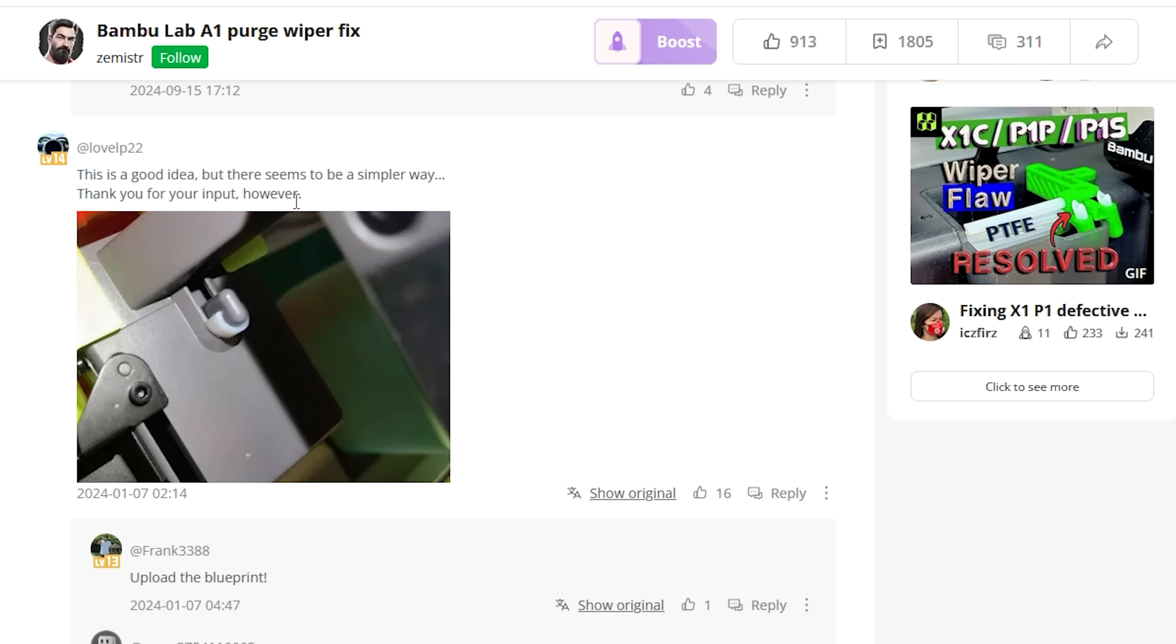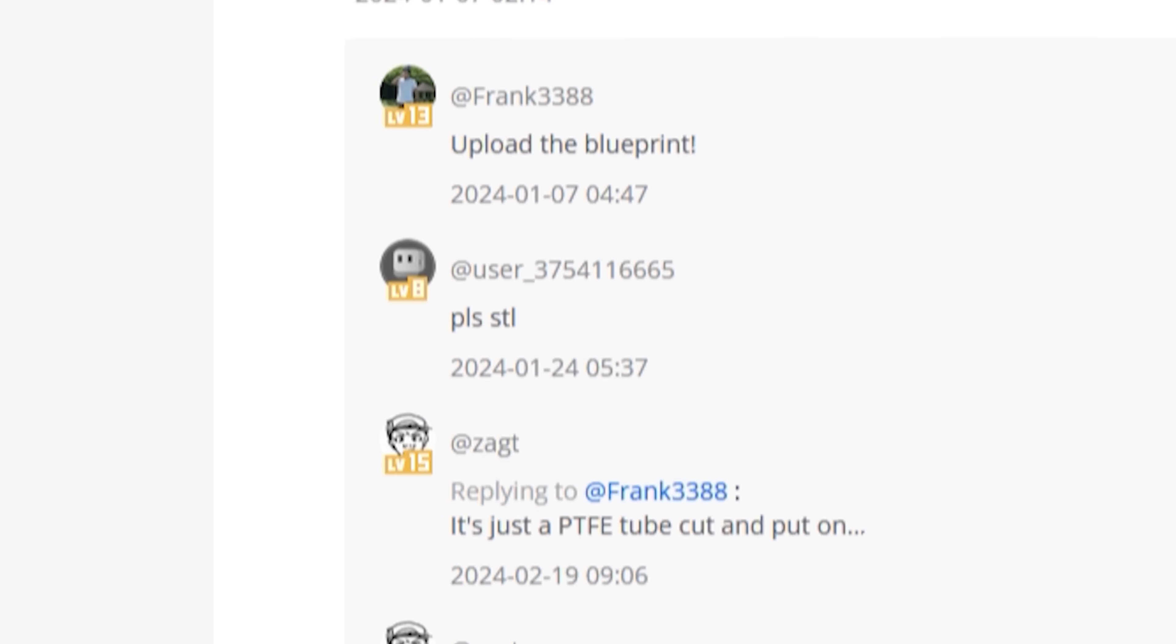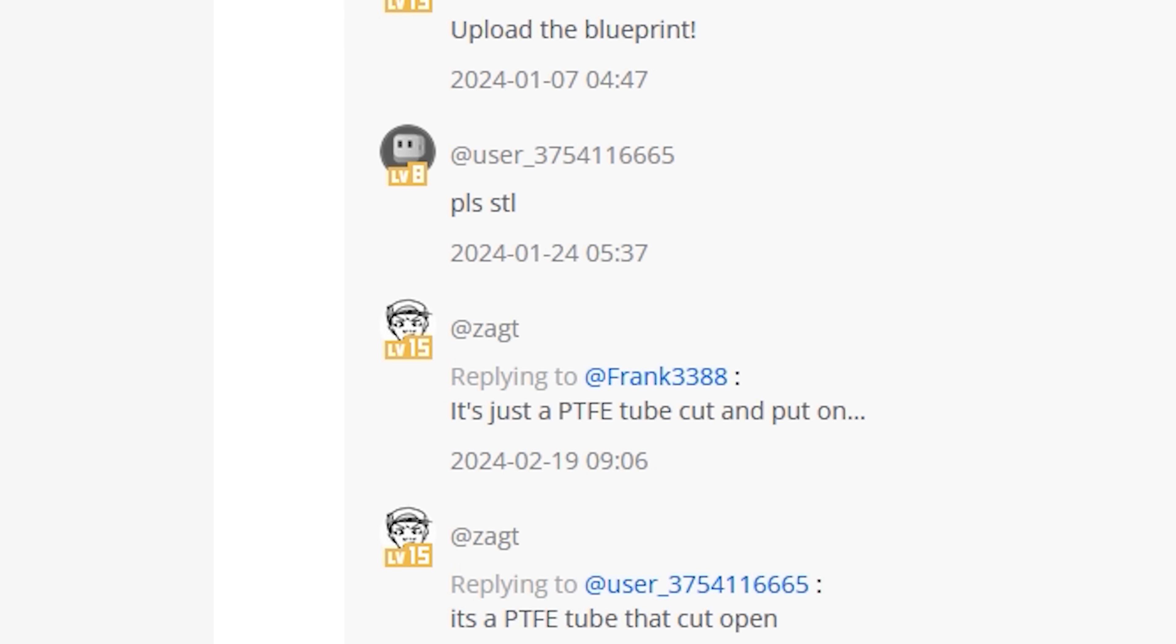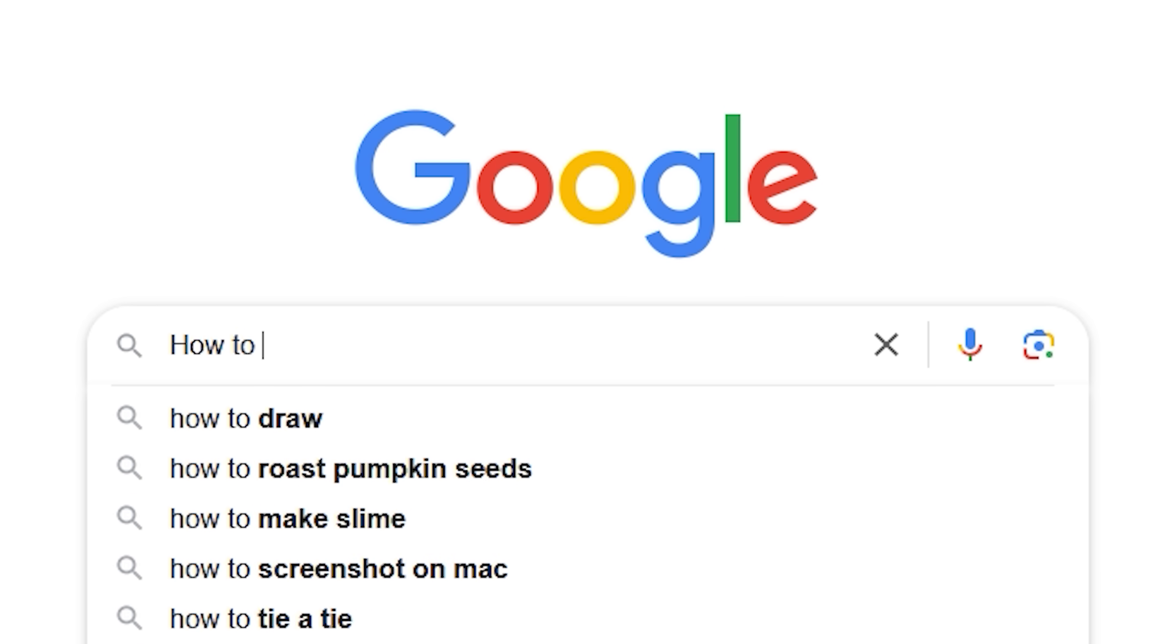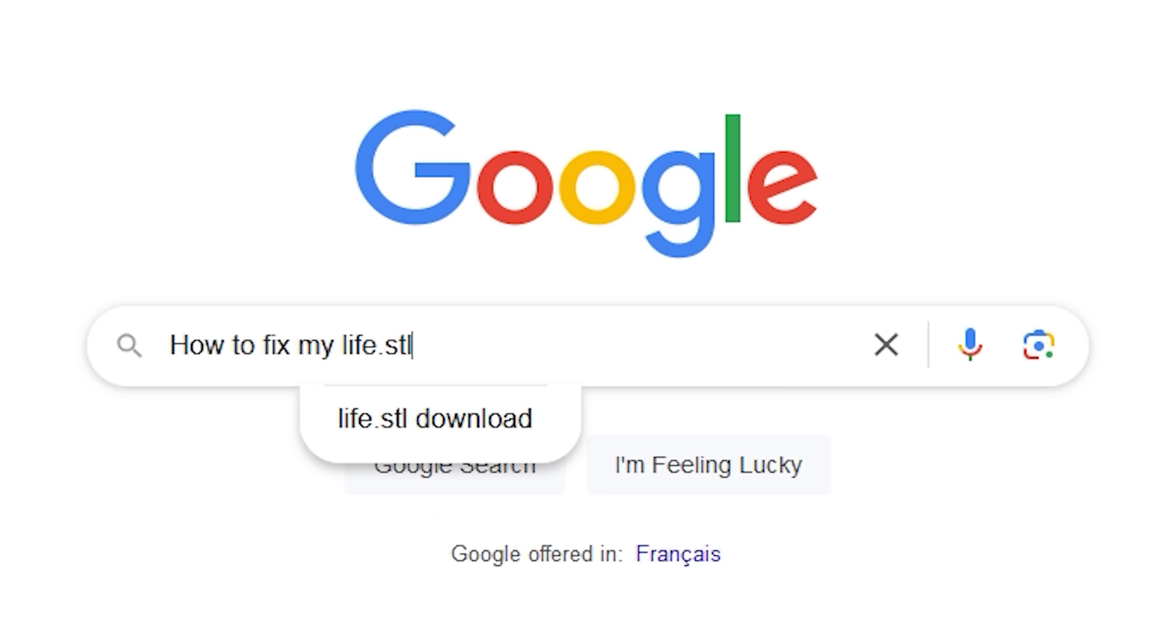Going down to the comments, where you can download this model, you see some funny commentators showcasing that you can just put a cut piece of PTFE tube over your purge wiper's latch to achieve the same results. Some users thought that this was a 3D printed part, so it was quite hilarious. People want STLs for everything. I want an STL to fix my life. Anyone knows where I can download something like that?